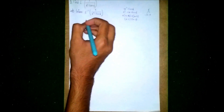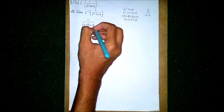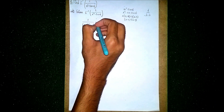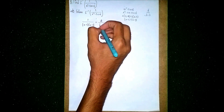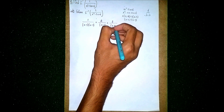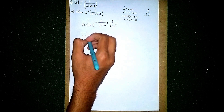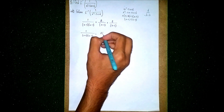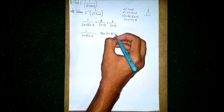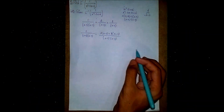We solve this question by partial fraction method. So 1 by s minus 2 into s minus 3 — this is given. We split these terms: A by s minus 2 plus B by s minus 3. Now cross-multiply: 1 by s minus 2 into s minus 3 equals A into s minus 3 plus B into s minus 2, over the denominator s minus 2 into s minus 3.